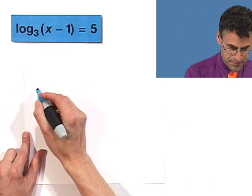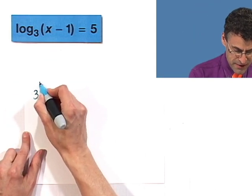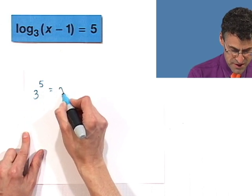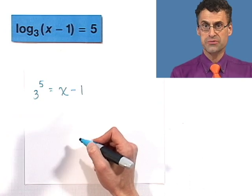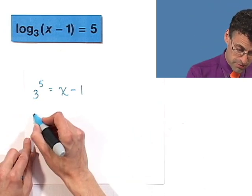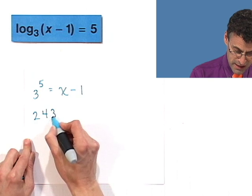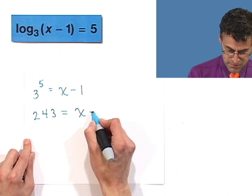So that's a fancy way of saying that 3 to the fifth equals x minus 1. Okay, well, what's 3 to the fifth? Well, that's 3 times 3 times 3, 5 times, and that's 243, and that equals x minus 1.